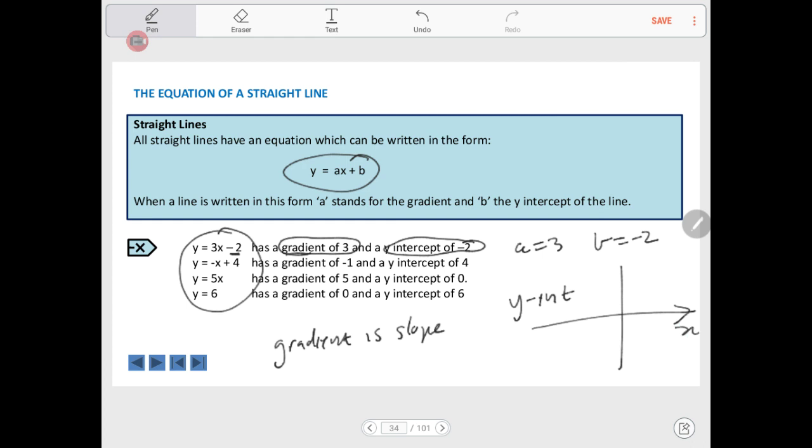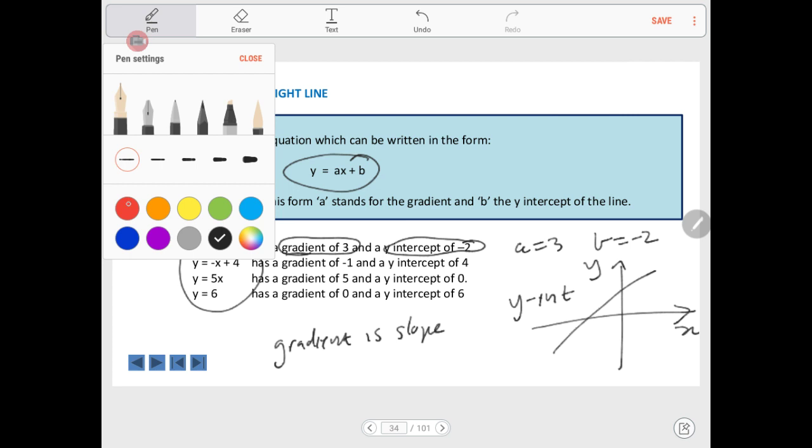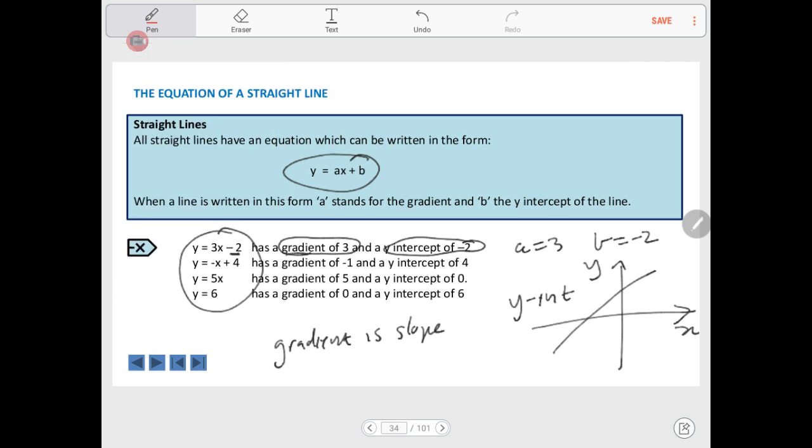So, if we've got an x-axis and a y-axis, and the line does this, our y-intercept will be right here on our line, where it cuts the y-axis. So, let's go on to these examples.